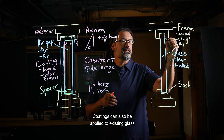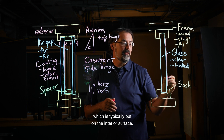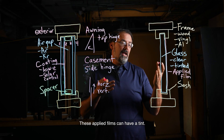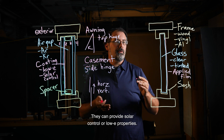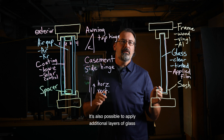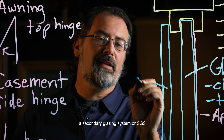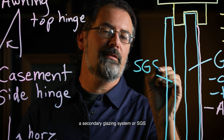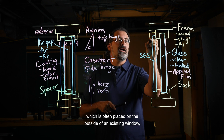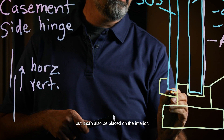Coatings can also be applied to existing glass in the form of an applied film, which is typically put on the interior surface. These applied films can have a tint, they can provide solar control, or low-E properties. It's also possible to apply additional layers of glass to existing windows. This is called a secondary glazing system, or SGS, or it's more familiarly known as a storm window, which is often placed on the outside of an existing window, but it can also be placed on the interior.